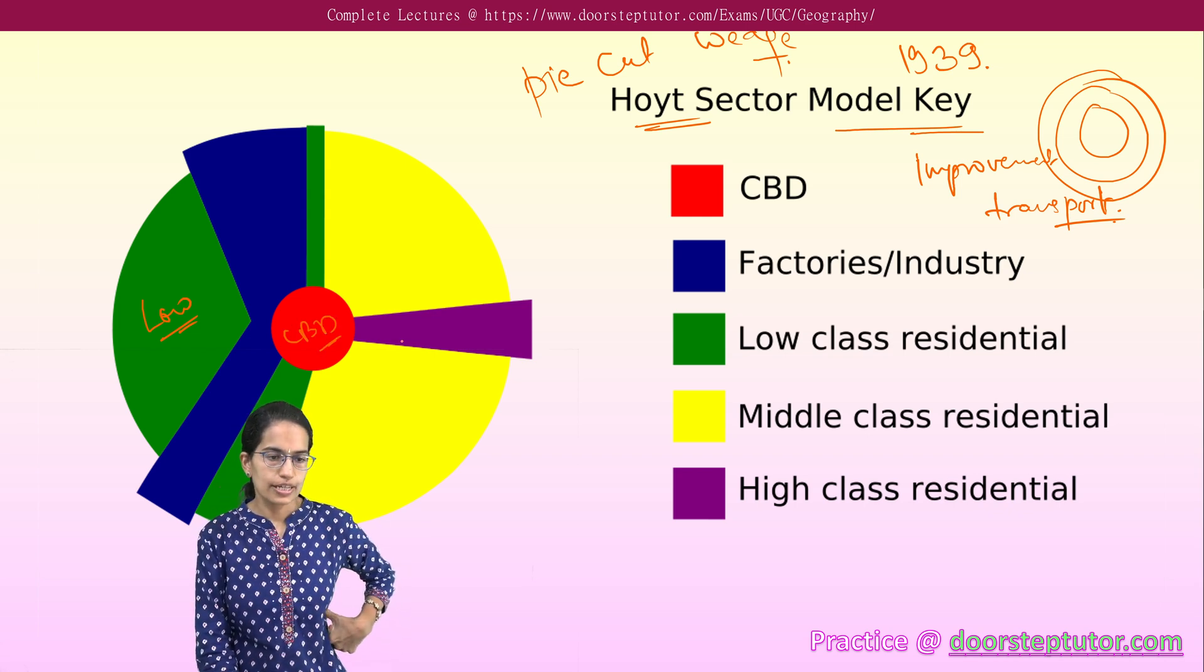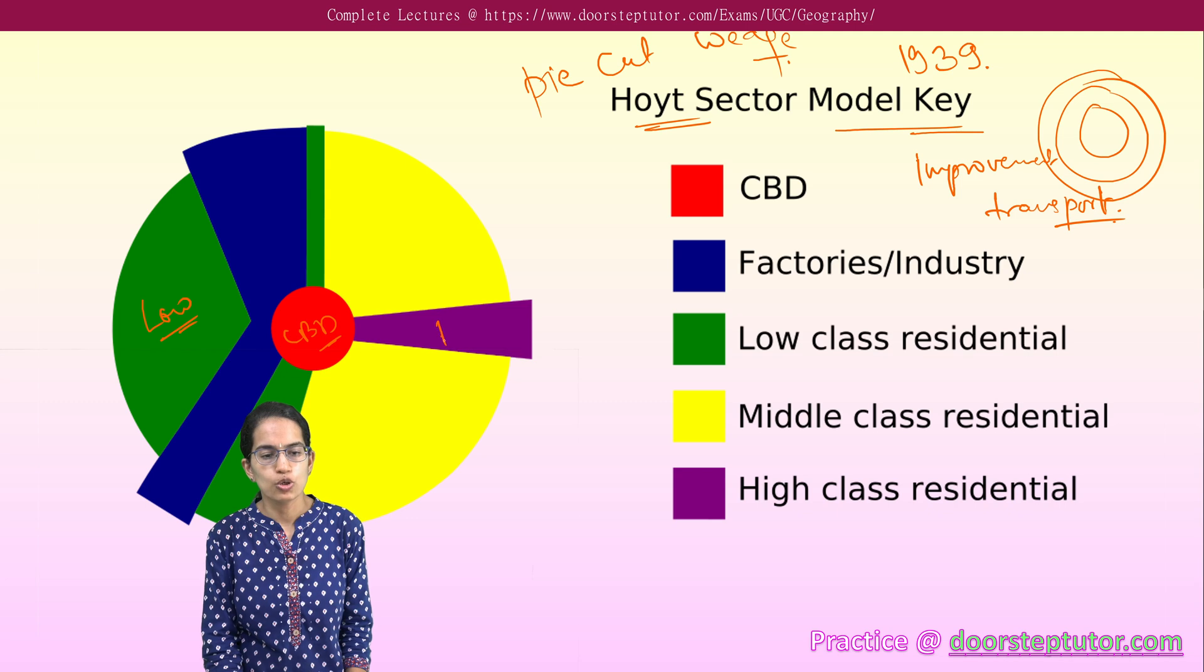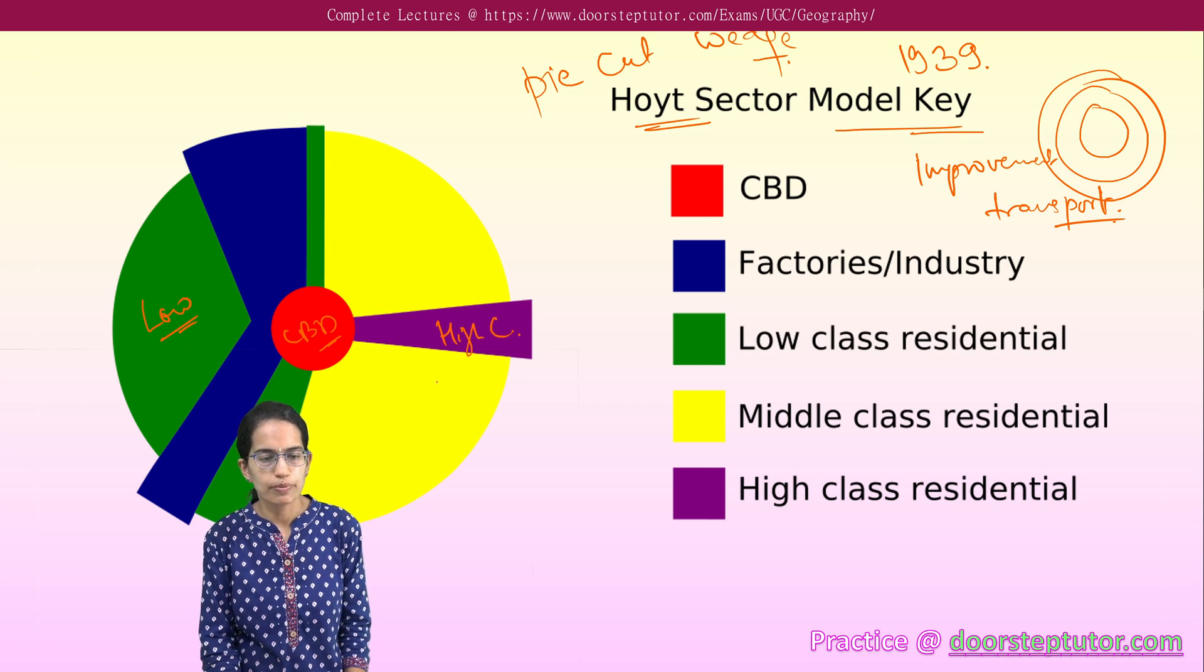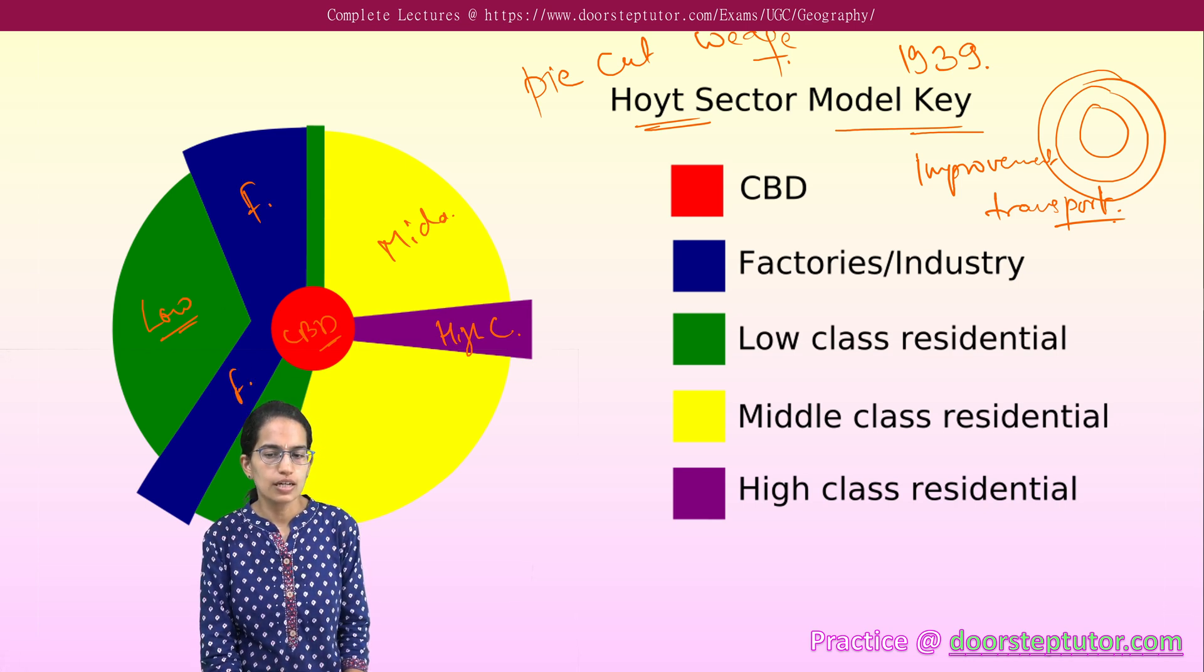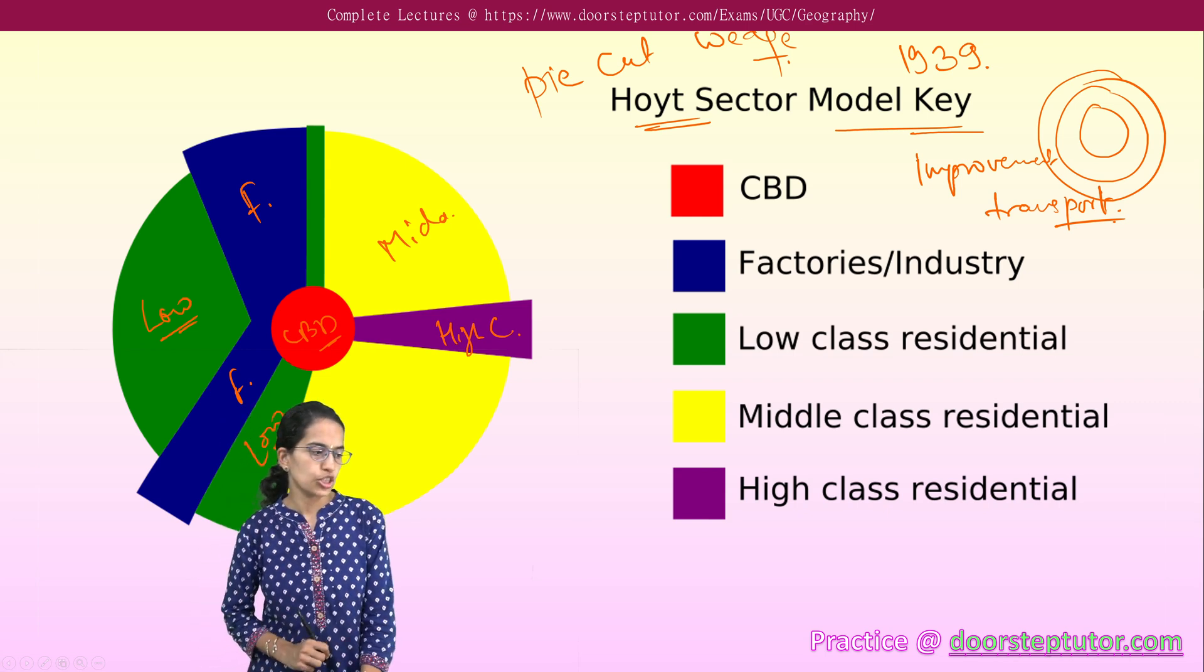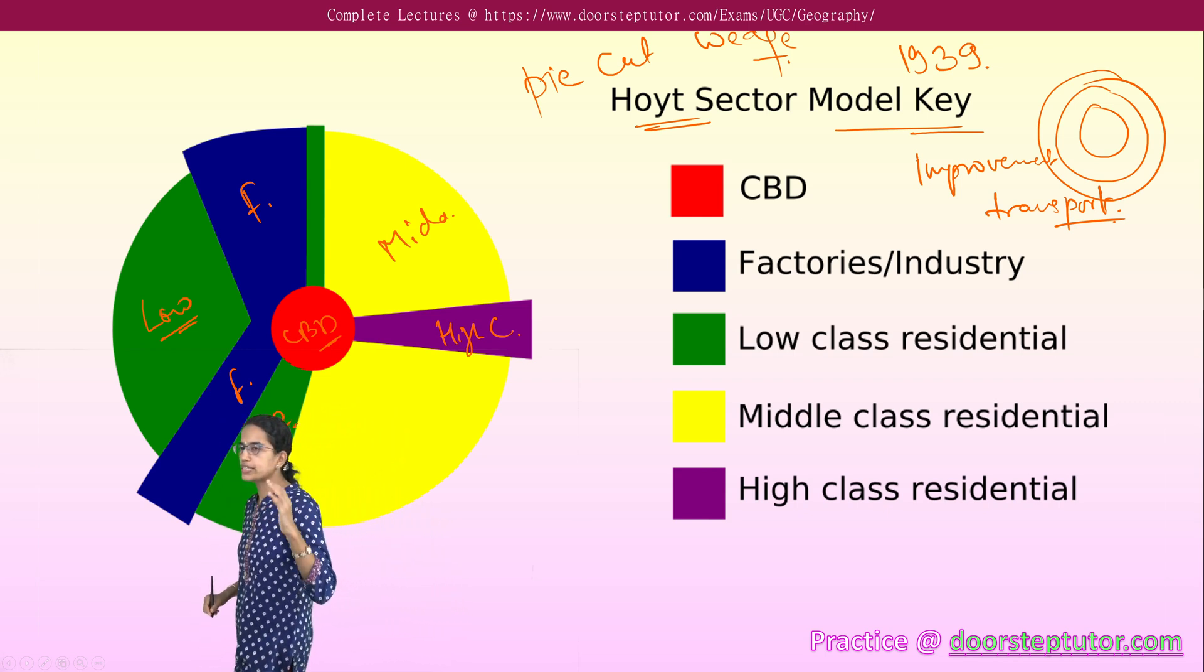The red one is the CBD, the purple here shows the high class residential population, then the middle class residential population, the blue one is the factories and the remaining green one is the low class residential population.